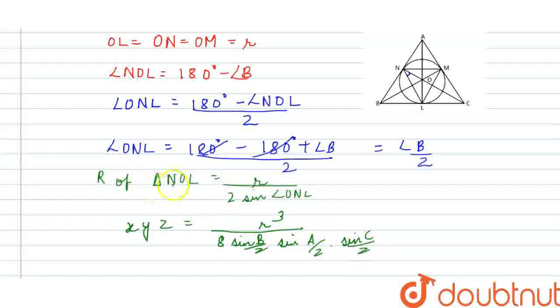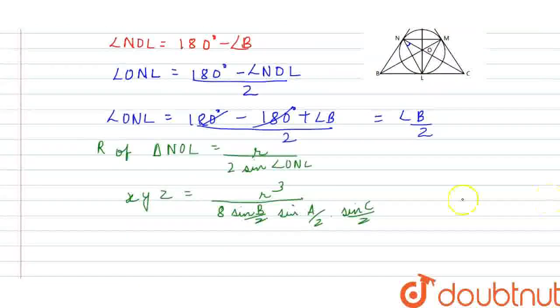So, basically, this was for one angle, that is X, because X is the circumradius of triangle M-I-N. Similarly, for the three triangles, I am multiplying, so it would be like this.